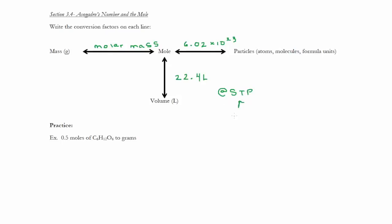And so, the temperature at standard temperature and pressure is 0 degrees Celsius, and the pressure is 1 atmosphere. So, if I'm under those conditions, I can assume that one mole equals 22.4 liters. So, the molar mass equals 1 mole, 6.02 times 10 to the 23rd, either atoms, molecules, or formula units equals 1 mole, and then 22.4 liters equals 1 mole.